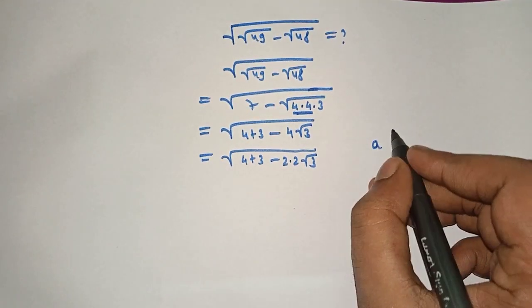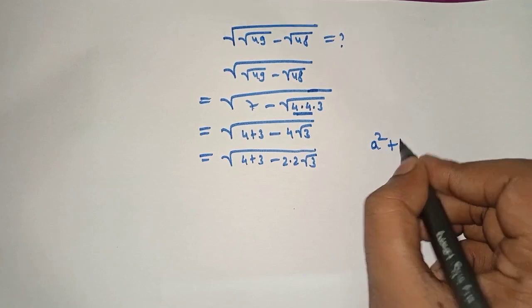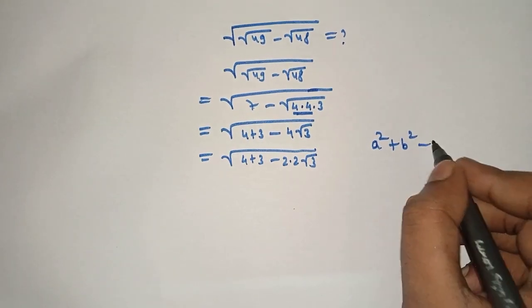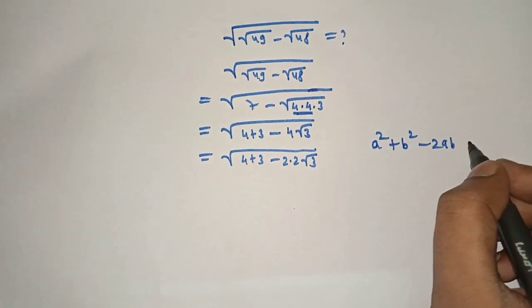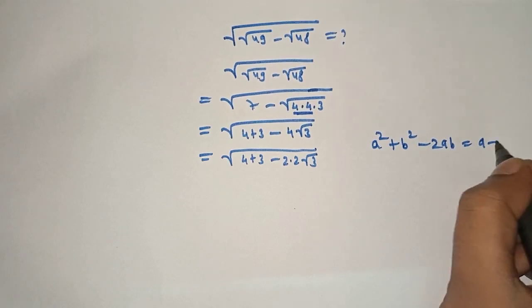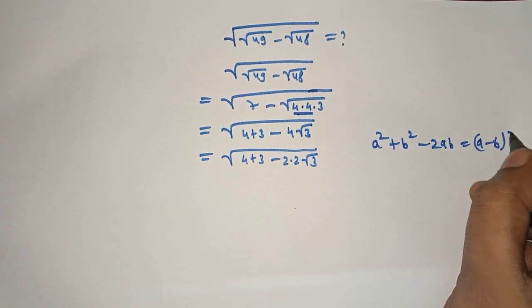a whole square plus b square minus 2ab, which is equal to a minus b the whole square.